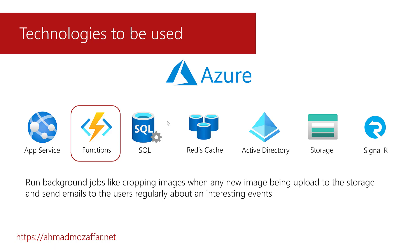Azure Functions will allow us to run jobs in the background or long-running tasks based on a specific trigger. We will use them to crop and create thumbnails from the images that are going to be uploaded for the gallery of the events. For example, the organizer uploads a set of pictures in full HD or high resolution, and Azure Functions will run in the background and create thumbnail or small pictures of those and store them in storage.